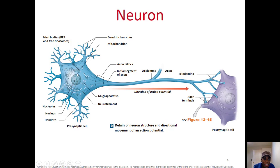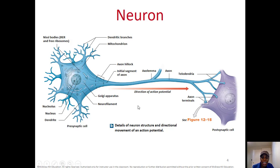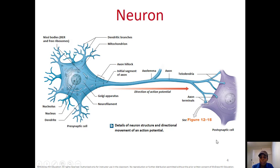You see the dendrites, and inside you can also see the rough ER and free ribosomes — we call them Nissl bodies in neurons. There's a red arrow showing the direction of action potential from the cell body to the axon terminal. You also have the axolemma, which is the membrane on the axon, and the telodendria at the very end. The space between two neurons is called a synapse. The neuron before the synapse is the presynaptic cell, and the neuron after is the postsynaptic cell.